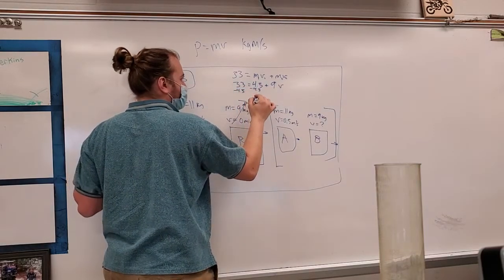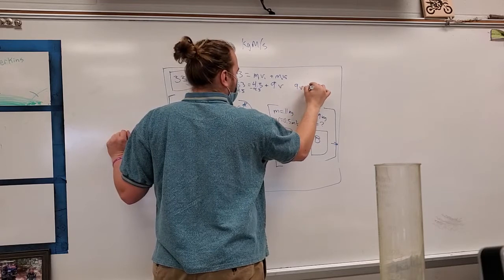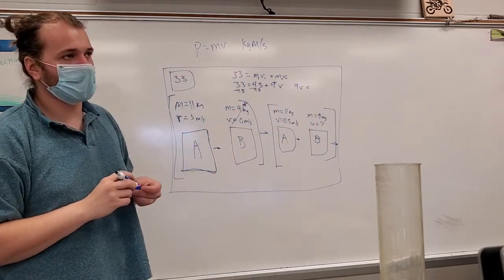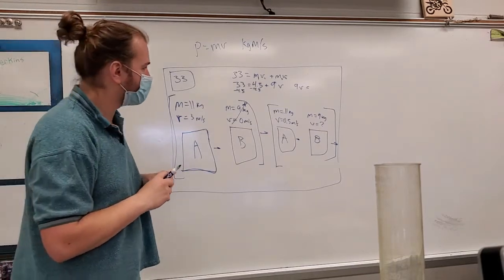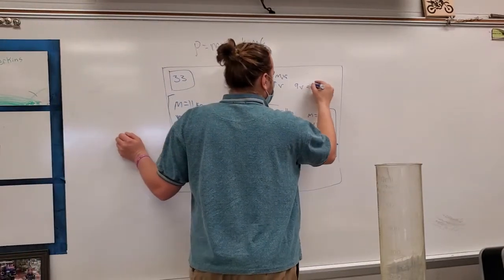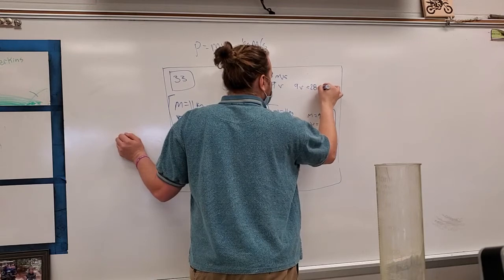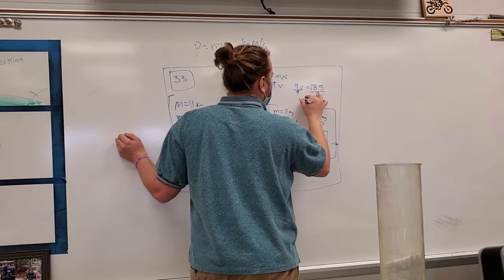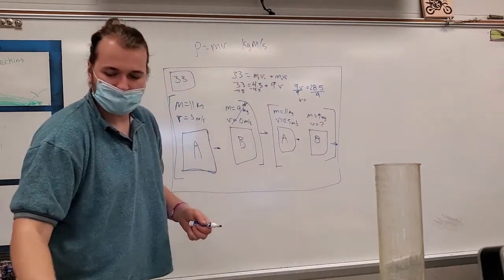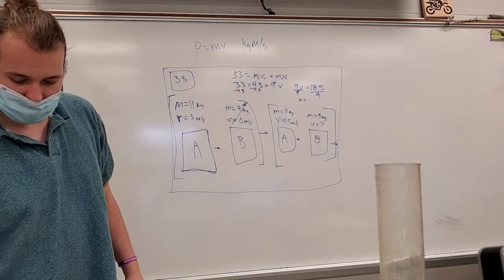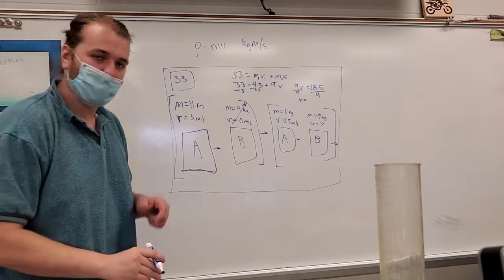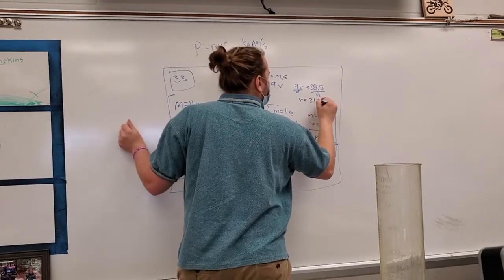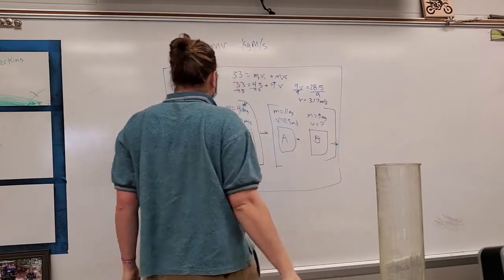And we're left with 9 times velocity is equal to, let's see, 33 minus 4 is equal to 29 minus 0.5 is equal to 28.5. Divide by 9, divide by 9, and our velocity is going to be just over 3. 3.17.